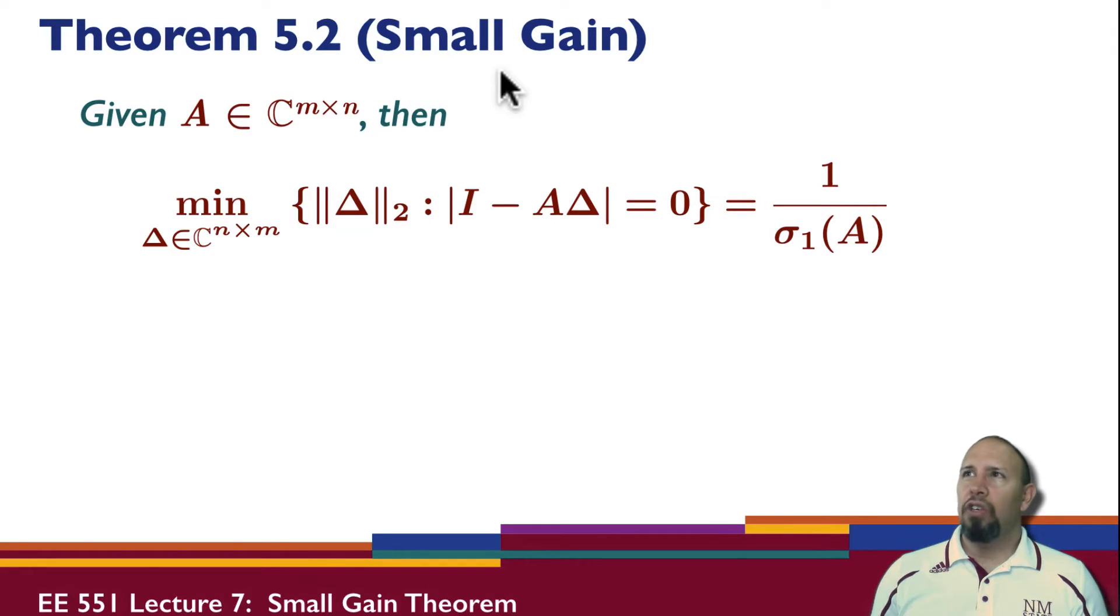We're going to see later why that name is appropriate. But this is, again, the two norm. We're trying to find the smallest two norm, such that the determinant of I minus A delta, that determinant is zero. So we're trying to find the smallest delta that makes this happen. And it turns out we can show it's equal to one over the largest singular value of A. So one over the norm of A. You can go through and show that.